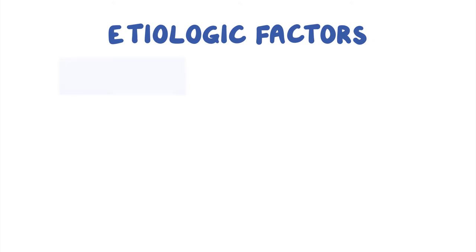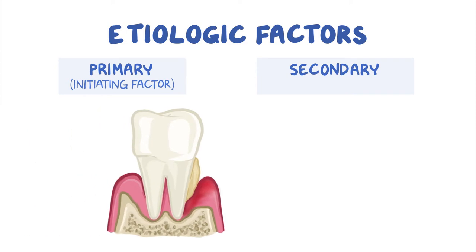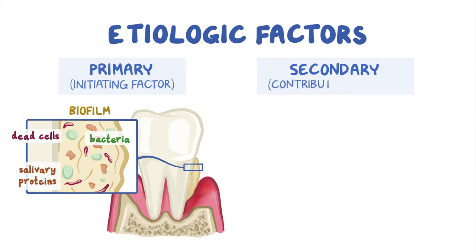Etiologic factors in periodontal disease are subdivided into two main groups: primary and secondary etiologic factors. The primary or initiating etiologic factor is the dental plaque or dental biofilm, which is a sticky collection of bacteria, salivary proteins, and dead cells from the oral mucosa. Secondary, also known as contributing etiologic factors, enhance the ability of dental plaque to cause periodontitis.